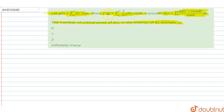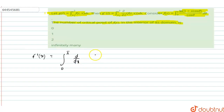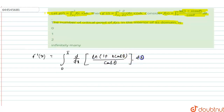Firstly, we have to find the value of f'(x). Then f'(x) can be written as limit 0 to π, d/dx of ln(1 + x cos θ) / cos θ dθ. This is actually a partial differentiation.